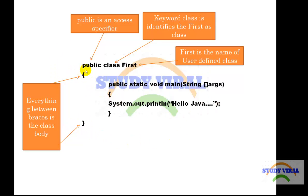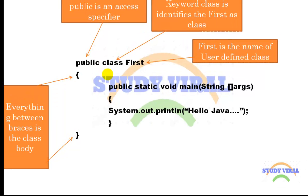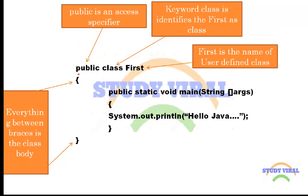Here you can see a simple Java class like 'public class First'. That is a simple Java class. In between that there is a public static void main — we will talk about the main method on the next slide. Here 'First' is a user-defined class name; it can be anything like your name, my name, or 'StudyViral'. 'class' is a keyword recognized by the Java compiler, and anything written after this class keyword like 'First' is a user-defined class name.